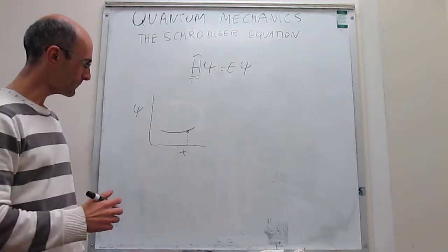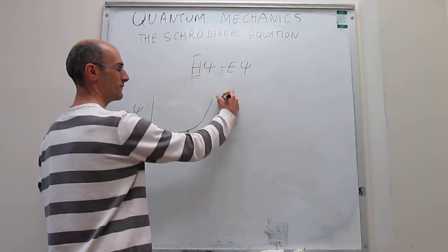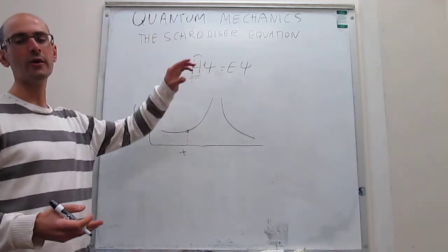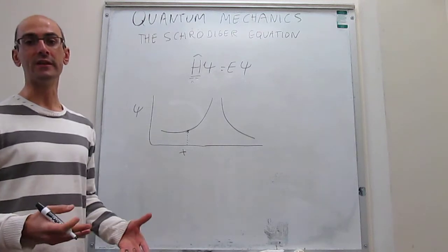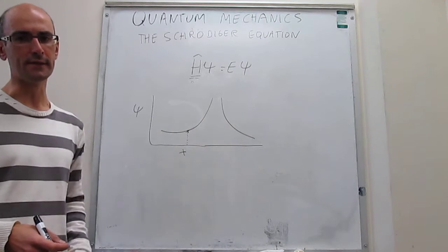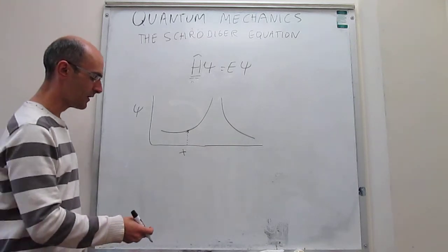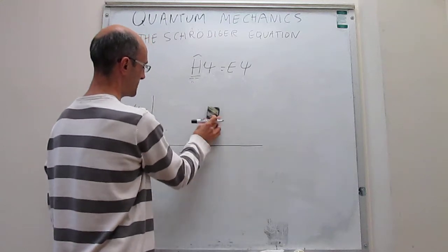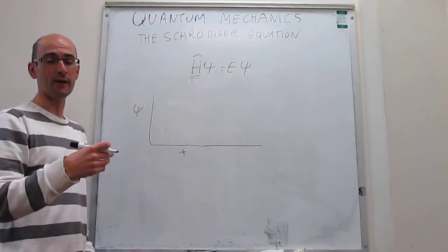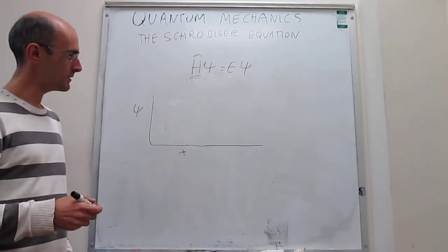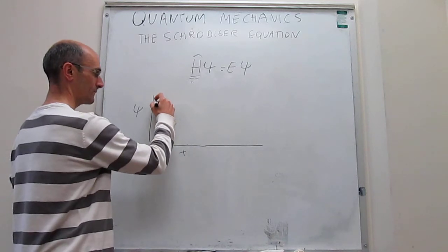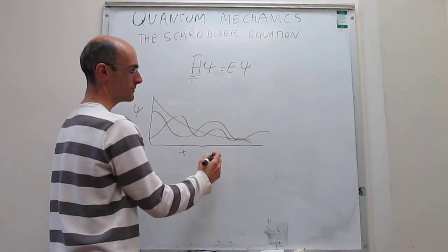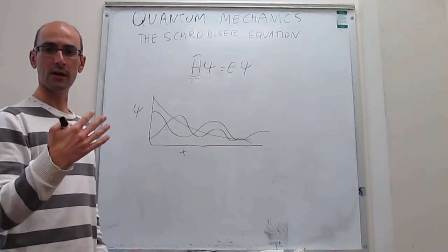The wave function also has to be continuous. Wave functions that go to infinity and then return won't work because when we apply the Hamiltonian operator we have to take second derivatives, and the second derivative at infinity is ill-defined. Finally, the wave function has to be smooth. Occasionally we will have to describe wave behavior, and typical wave functions might look like a smooth oscillating curve — functions that are continuous, smooth, and single-valued.